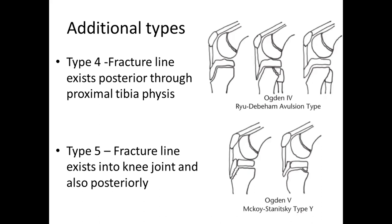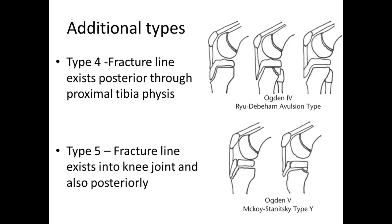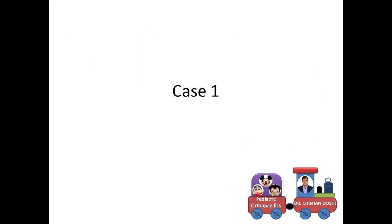Type 4 was the fracture going posteriorly. Type 5, described by McCoy and Stanitsky, was similar to Type 4 but the fracture line also goes through the joint — like a Y-type — going through the tibial tuberosity into the joint and then posteriorly through the posterior metaphysis. Management will be discussed based on clinical cases rather than a didactic lecture.